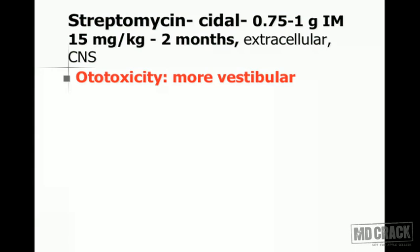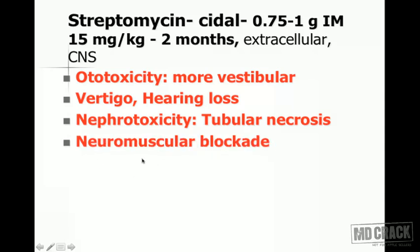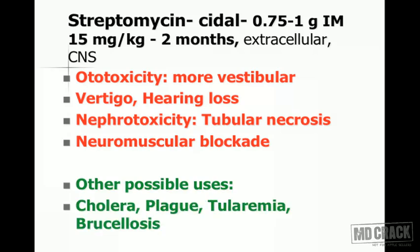Adverse effects of streptomycin as an aminoglycoside include ototoxicity — primarily affecting the vestibular component more than the cochlear, causing vertigo and hearing loss — and nephrotoxicity in the form of tubular necrosis. Neuromuscular blockade is a third toxicity. Other uses of streptomycin include cholera, plague, tularemia, and brucellosis.